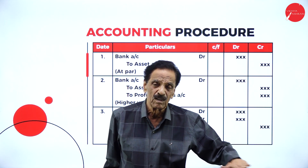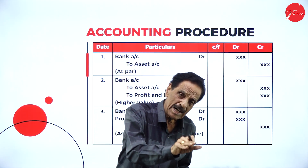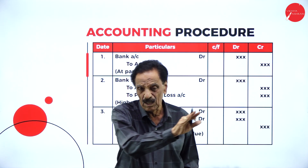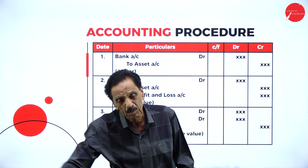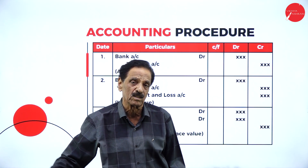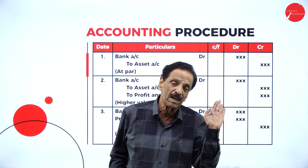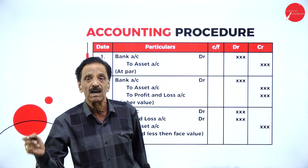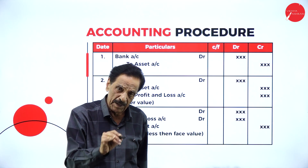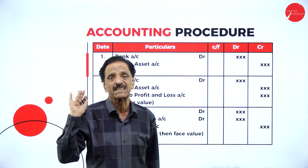To summarize asset sale entries: at same value — Bank Account Dr. to Asset Account. At higher value — Bank Account Dr. to Asset Account and Profit and Loss Account (profit credited). At lower value — Bank Account Dr. and Profit and Loss Account Dr. to Asset Account (loss debited).